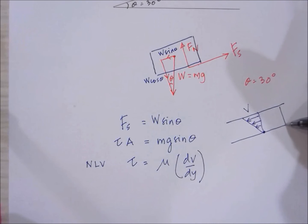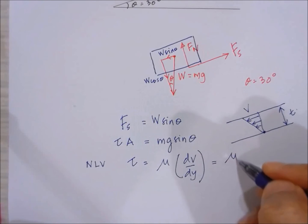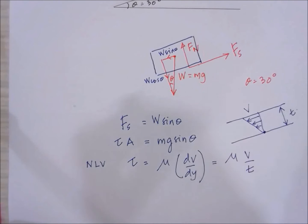And the thickness, let me just call this T. We can see from here that since this is actually a linear profile, tau is actually equal to mu V divided by t.